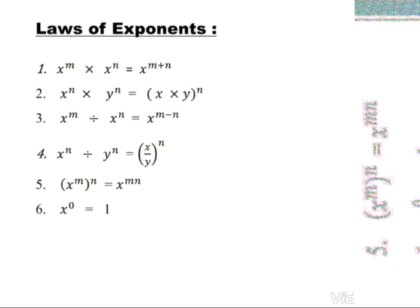The fifth law is: x to the power m, whole to the power n, equals x to the power m multiplied by n. When a base raised to a power is itself raised to another power, the two powers are multiplied. The last law is: x to the power zero equals one — any number raised to the power zero equals one.